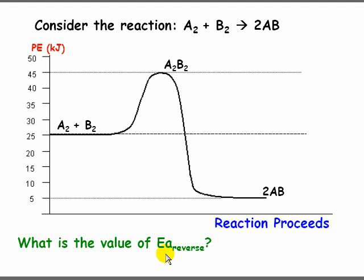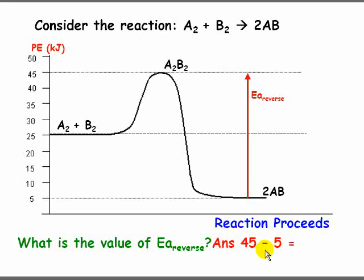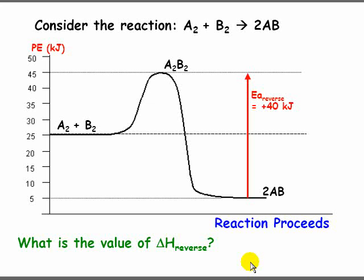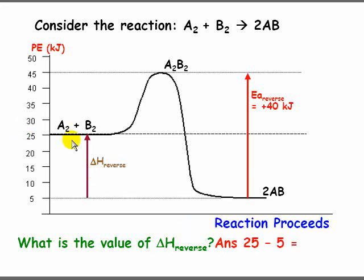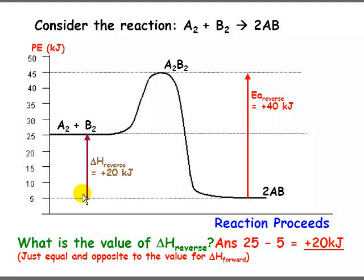Ea reverse goes from 5 all the way up to 45. So the answer is 45 minus 5, which is positive 40 kilojoules. Remember, Ea is always positive. For delta H reverse, we're going from 5 up to the reactants at 25. Notice that it's positive, so the answer is 25 minus 5, which is positive 20 kilojoules.